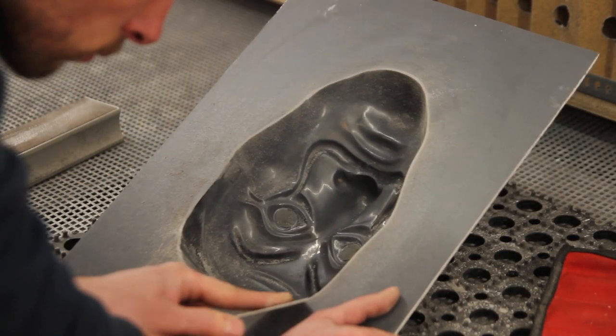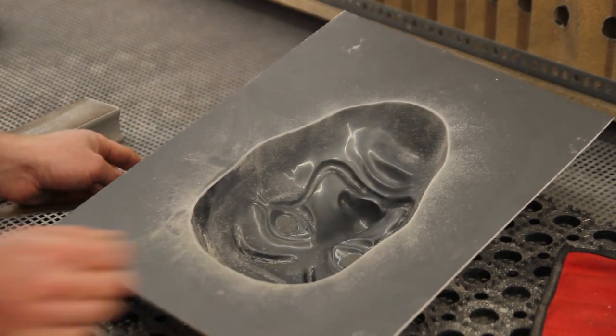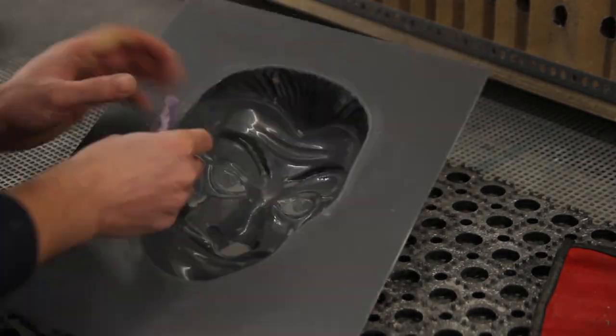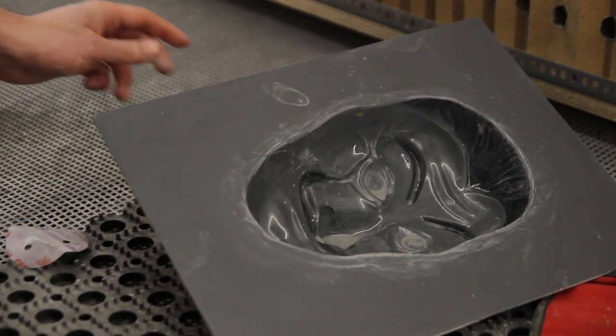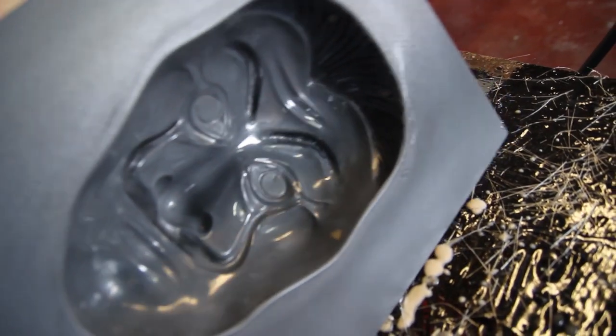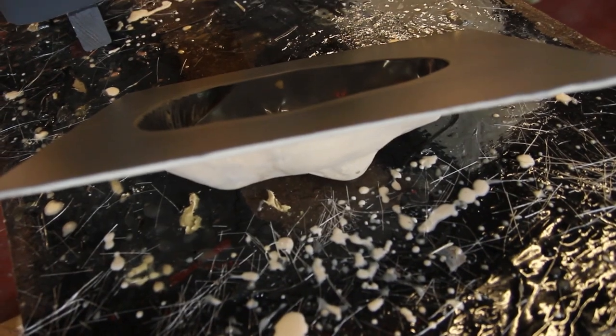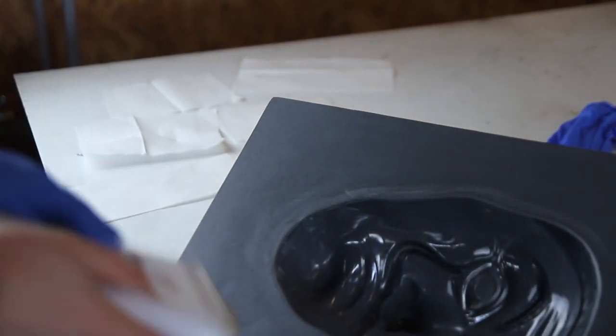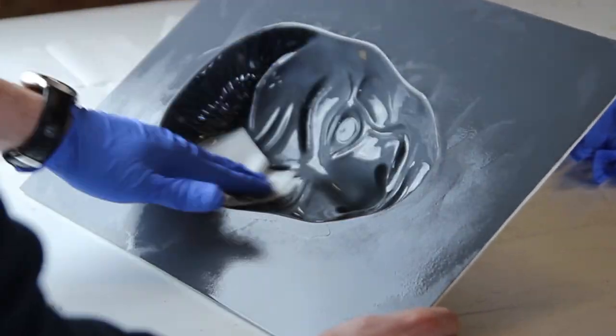So another important step here is just to round all the edges of the mold, because if you're using the system of resin infusion, resin will seep under all the edges and sometimes while removing it with the wedges you can just snap off some edges of your mold, and that's not something that we want. So everything is cleaned, it's sanded with 320 grit just to be sure there's no residue or contamination left on the mold.